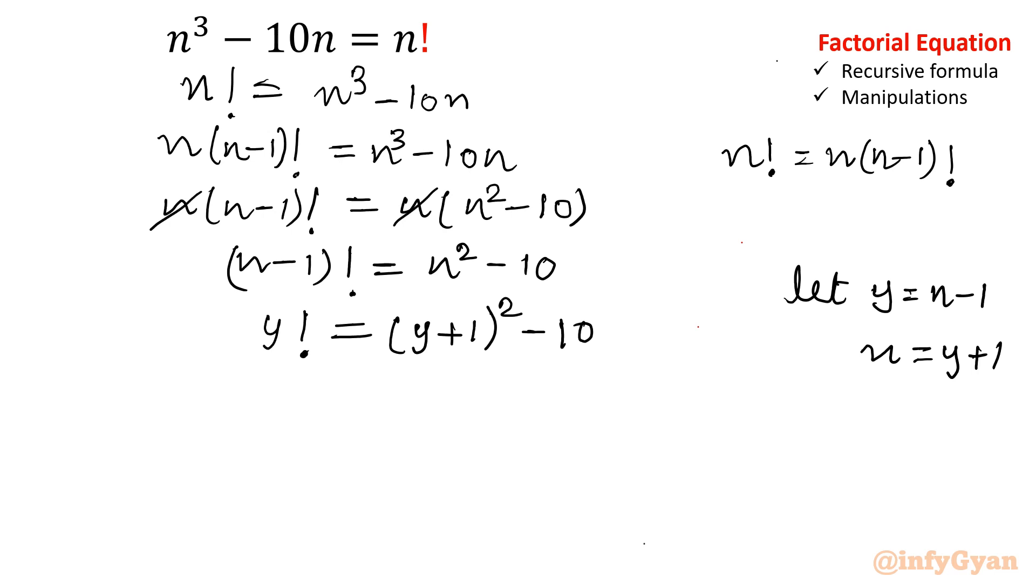Now open this square. We know that (a+b)² is an algebraic identity: a² + b² + 2ab. So let's write y² + 2y + 1 - 10.